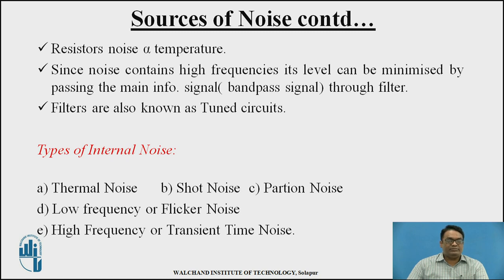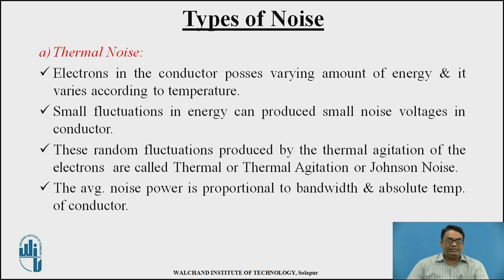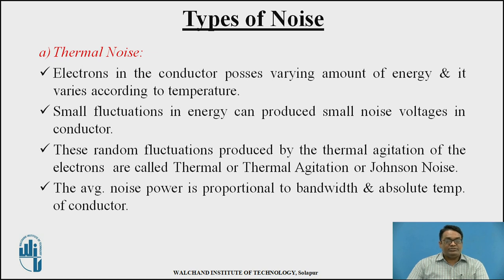Types of internal noises are thermal noise, shot noise, partition noise, low-frequency noise (flicker), and high-frequency transit time noise. Thermal noise arises because electrons in a conductor possess varying amounts of energy according to temperature, producing small voltage fluctuations. This random variation is called thermal agitation, and the resulting noise is called thermal noise or Johnson noise. The average noise power is directly proportional to bandwidth and the absolute temperature of the conductor.